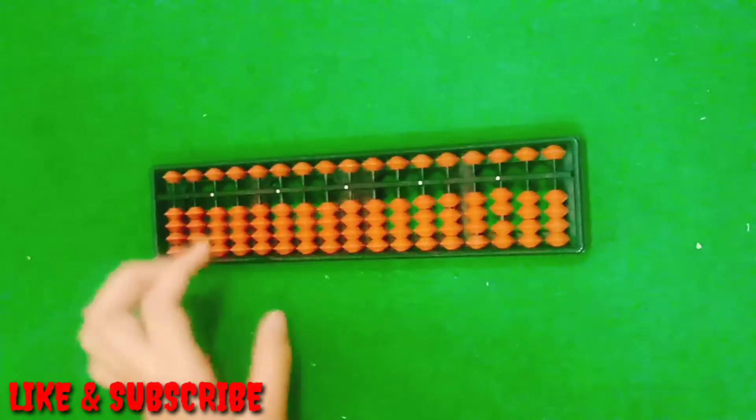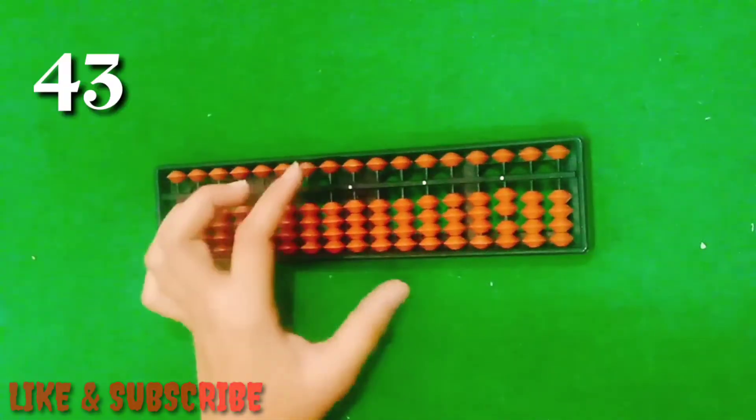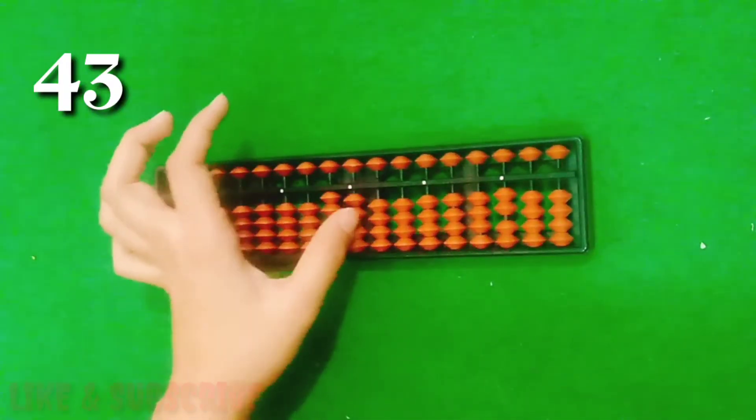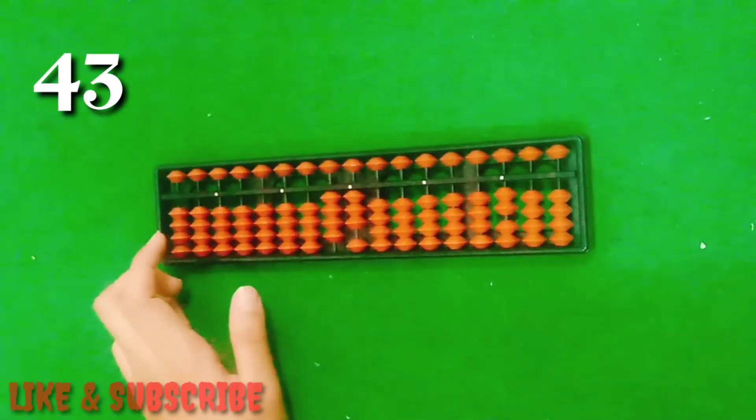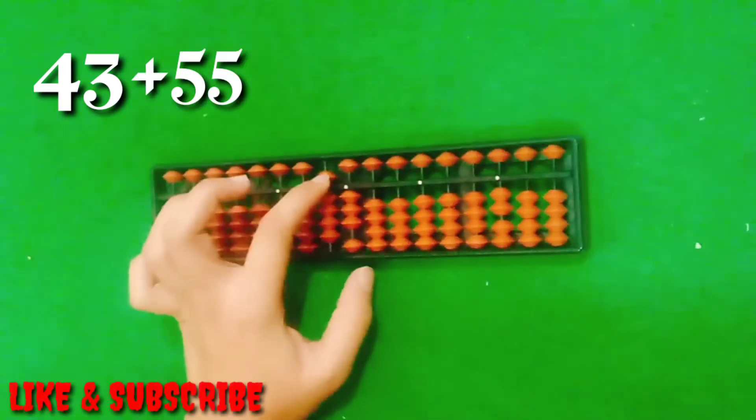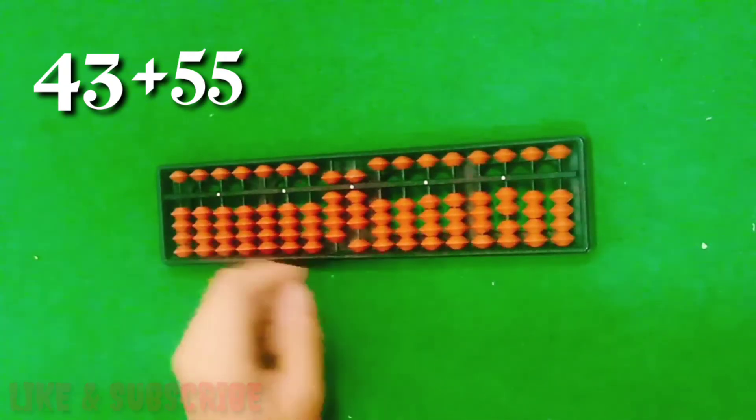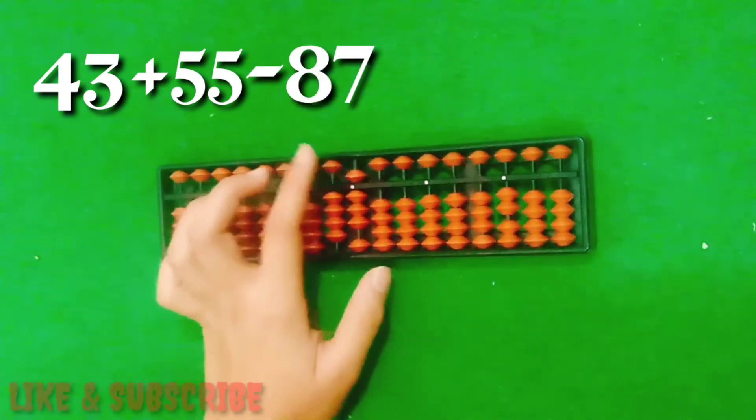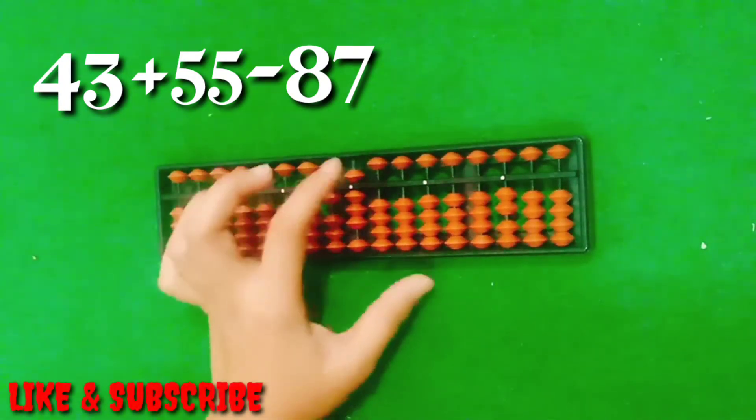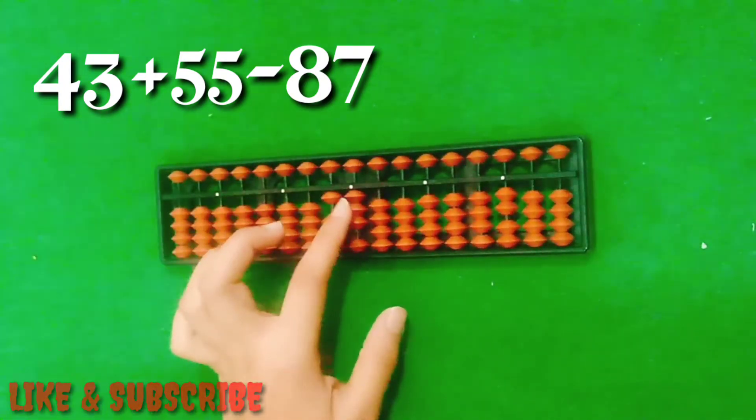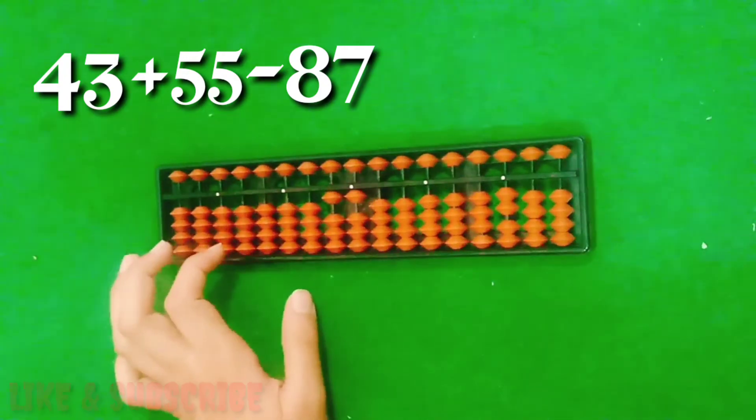Next question is: add 43, add 55, this is 50 and this is 5, less 87, add 57, add 22.